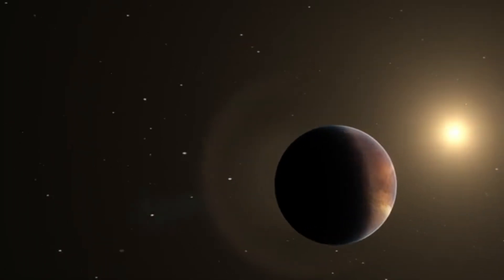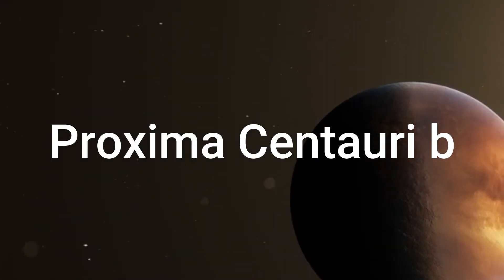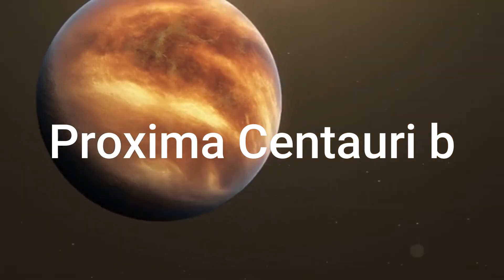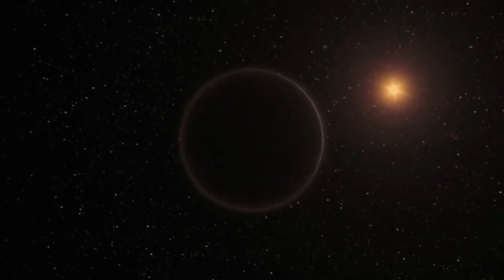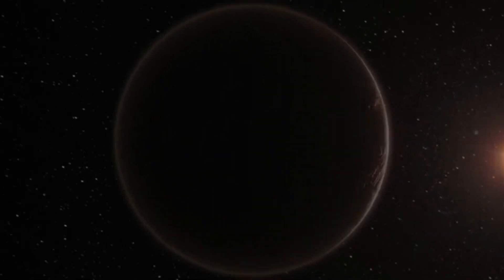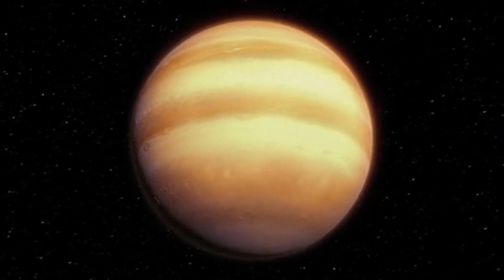One of the most notable Earth-like exoplanets is Proxima Centauri b, located just over four light-years from Earth in the habitable zone of its star, Proxima Centauri. Despite its potential, Proxima Centauri b faces significant atmospheric challenges.